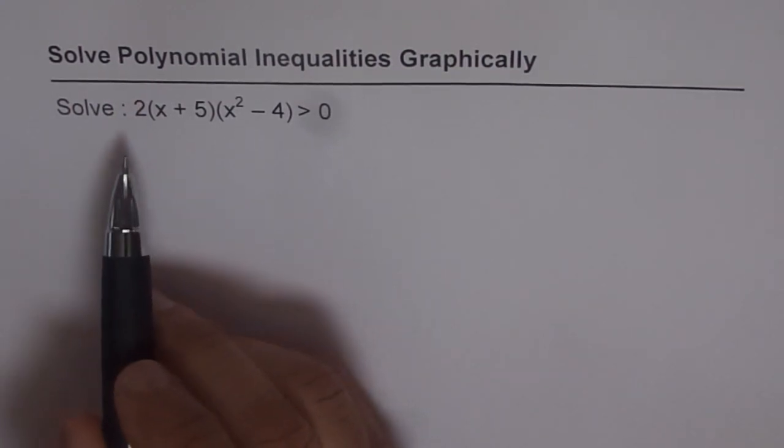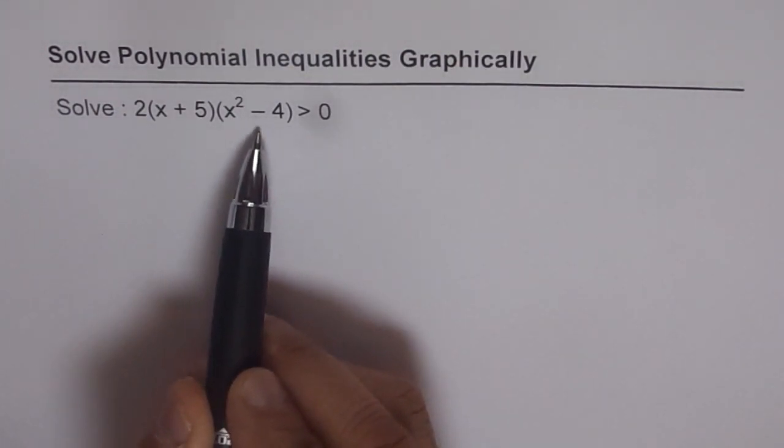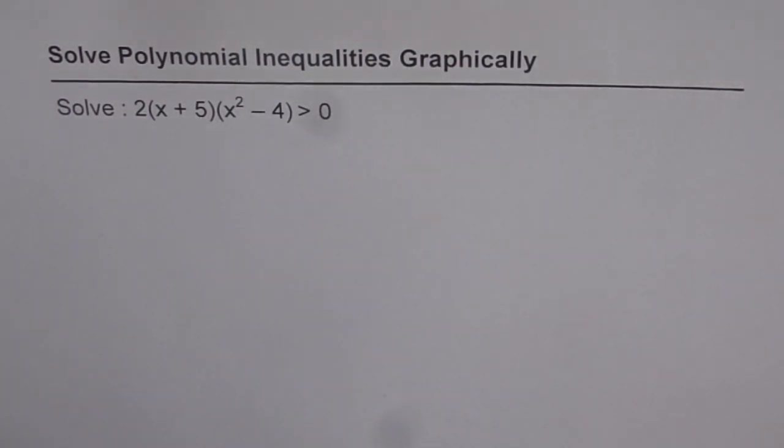Now, this one, the thing typical about here is that x squared minus 4 can be further factored. So you are given an equation which is not fully factored. In that case, it is important to factor your equation and then proceed.